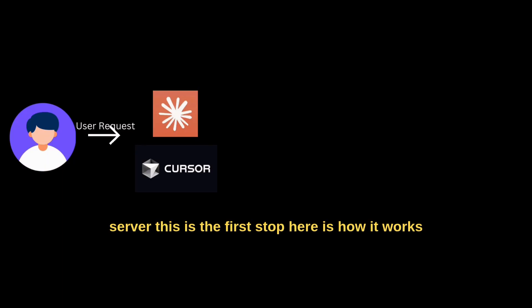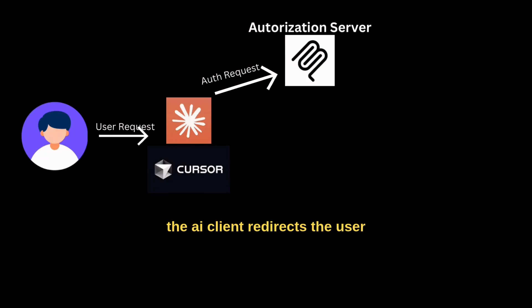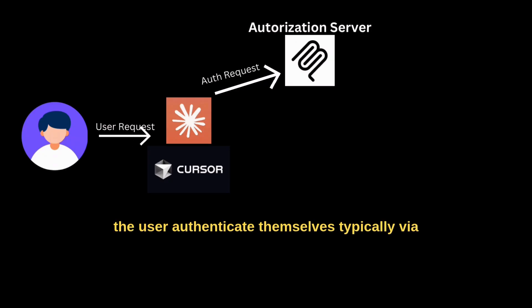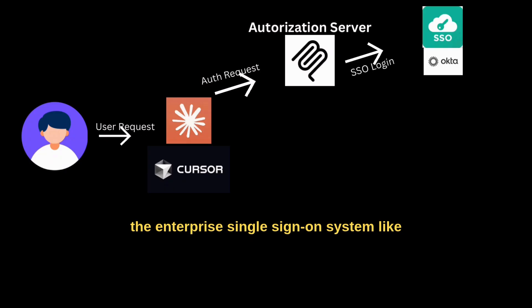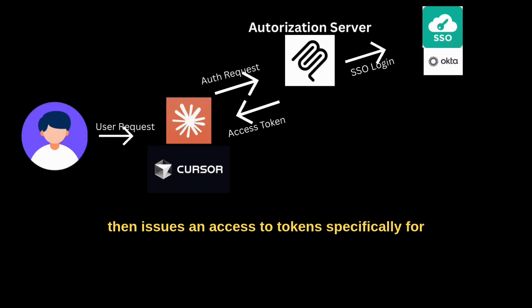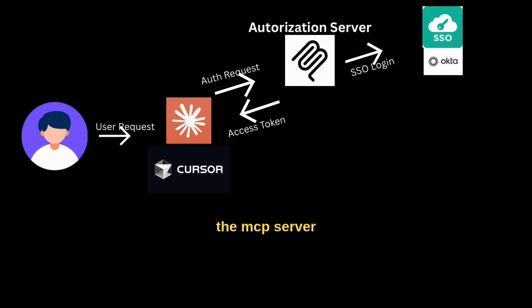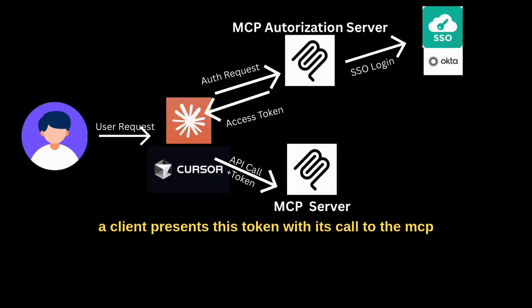AI client to MCP server — this is the first hop. Here is how it works: the AI client redirects the user to the MCP authorization server. The user authenticates themselves, typically via the enterprise single sign-on system like Okta or Entra ID. The authorization server then issues an access token specifically for the MCP server, and the AI client presents this token with its calls to the MCP server.